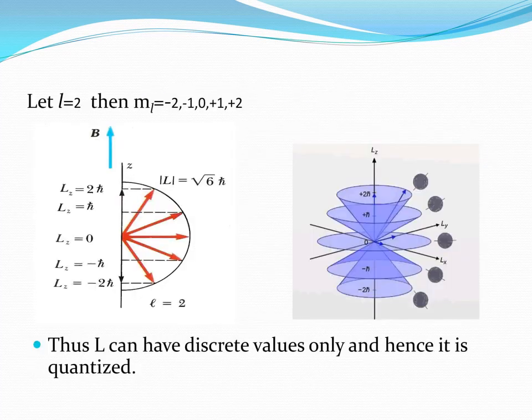For example, if l equals 2, the ml values range from minus l to plus l including 0. So ml values are minus 2, minus 1, 0, plus 1, plus 2.